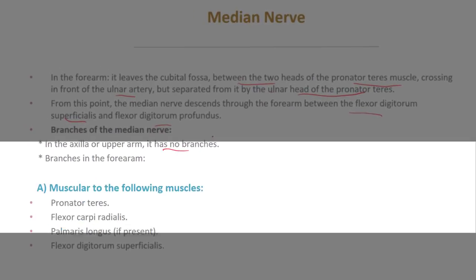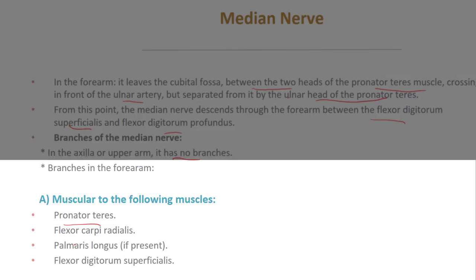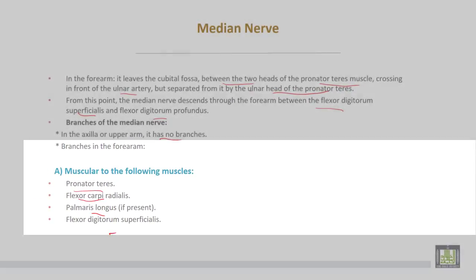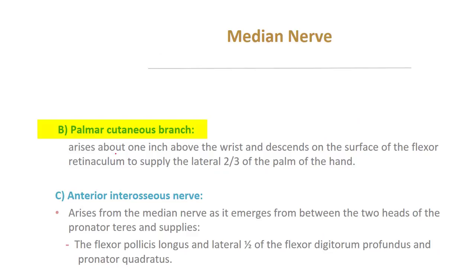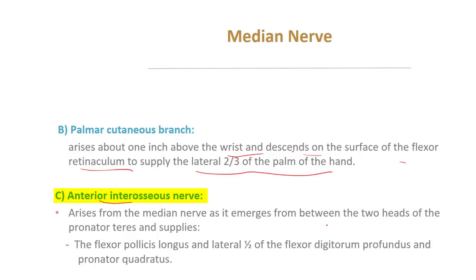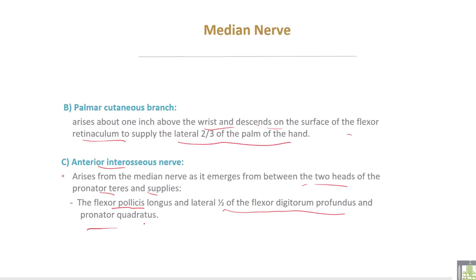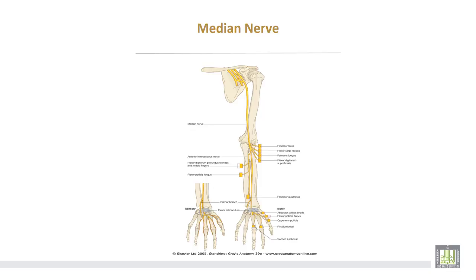Branches of the median nerve in the forearm include muscular branches to pronator teres, flexor carpi radialis, palmaris longus if present, and flexor digitorum superficialis. A palmar cutaneous branch arises about one inch above the wrist and runs on the surface of the flexor retinaculum to supply the lateral two-thirds of the palm of the hand. The anterior interosseous nerve arises from the median nerve as it emerges from between the two heads of pronator teres muscle.